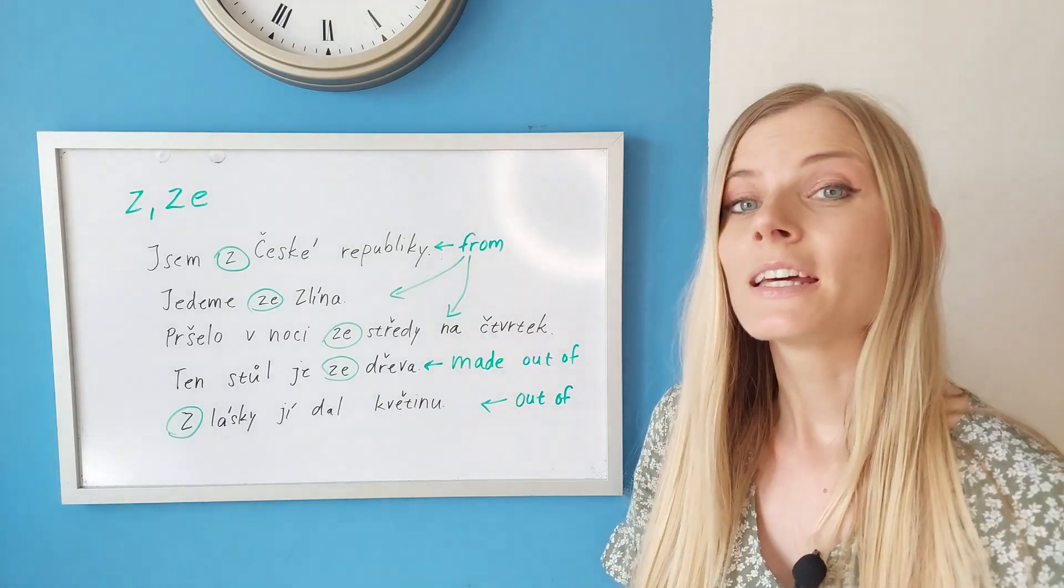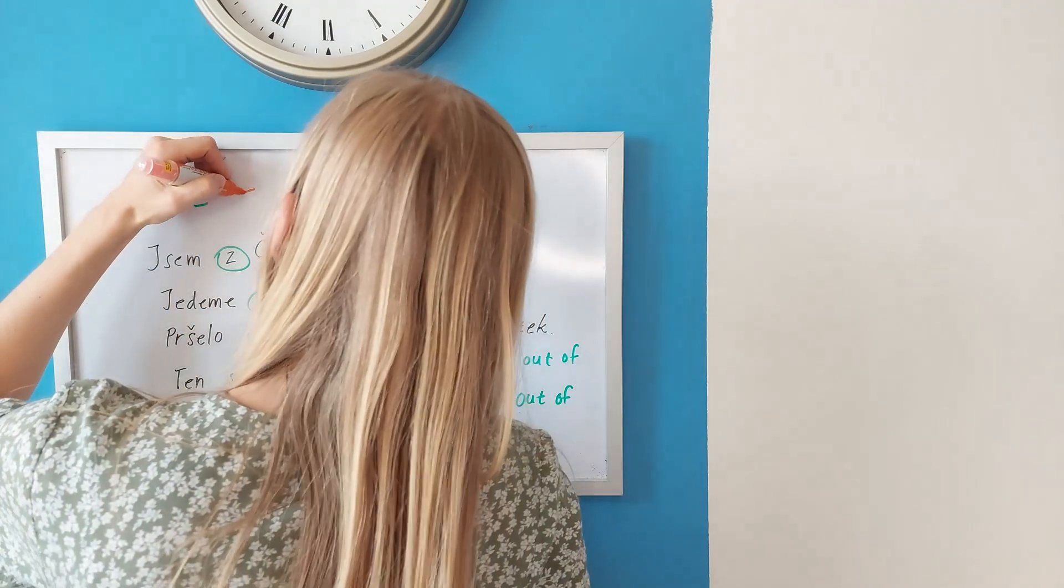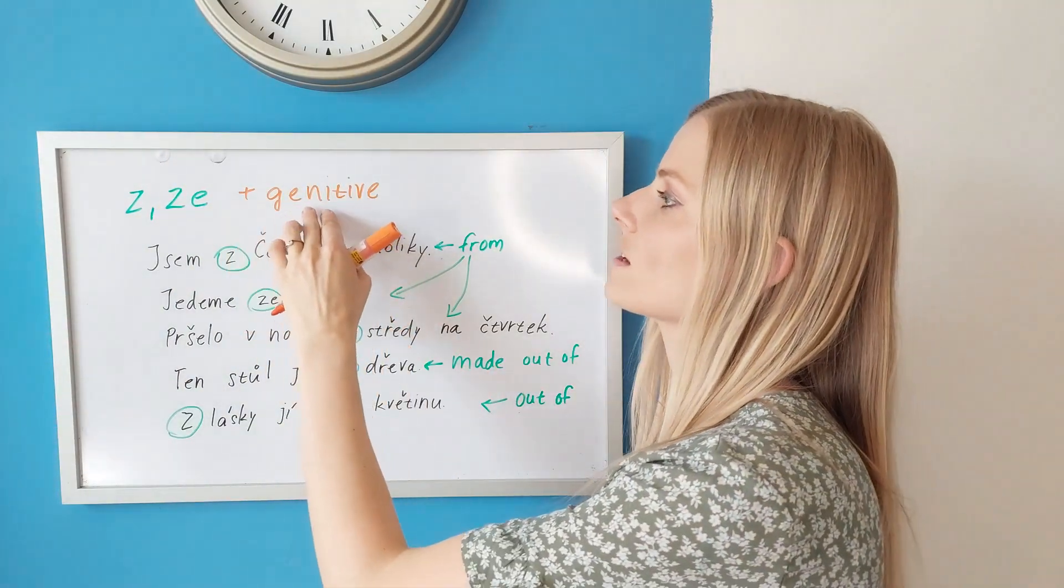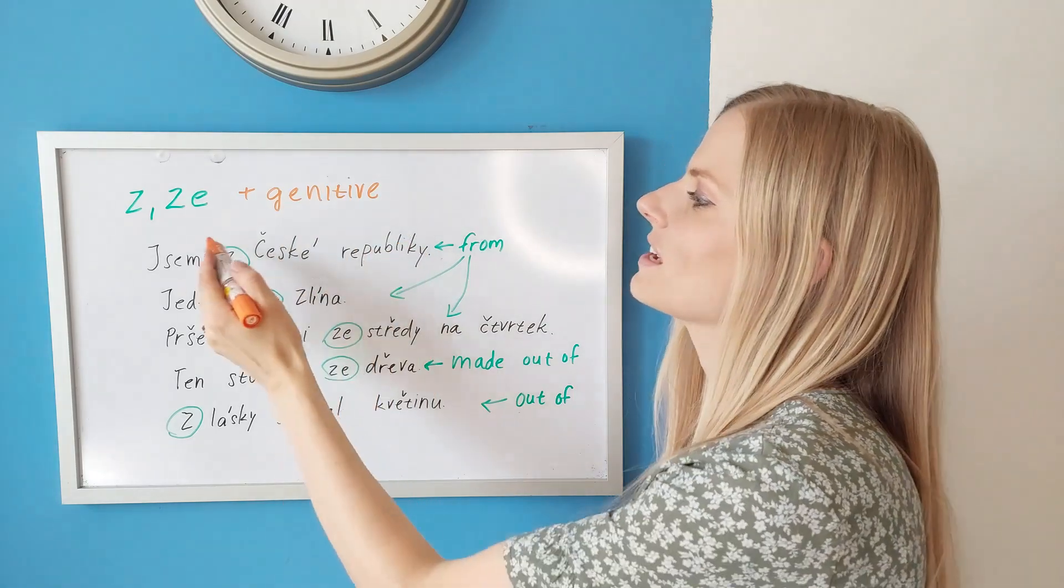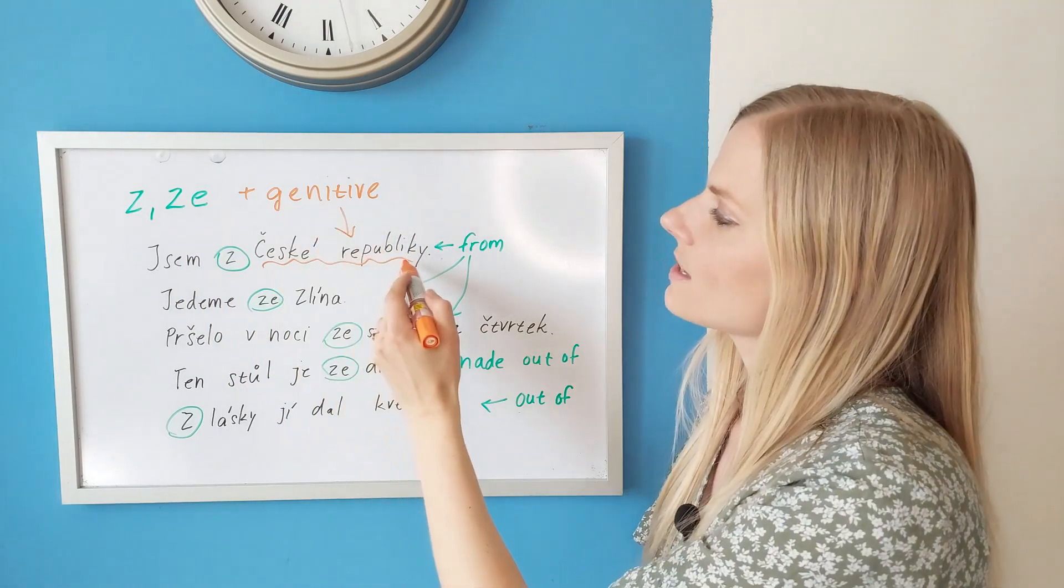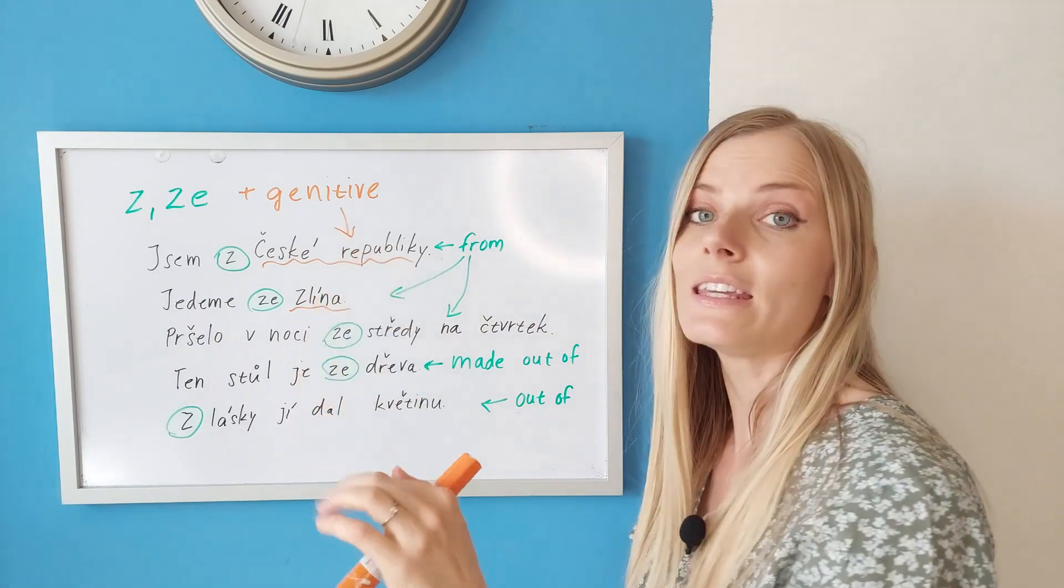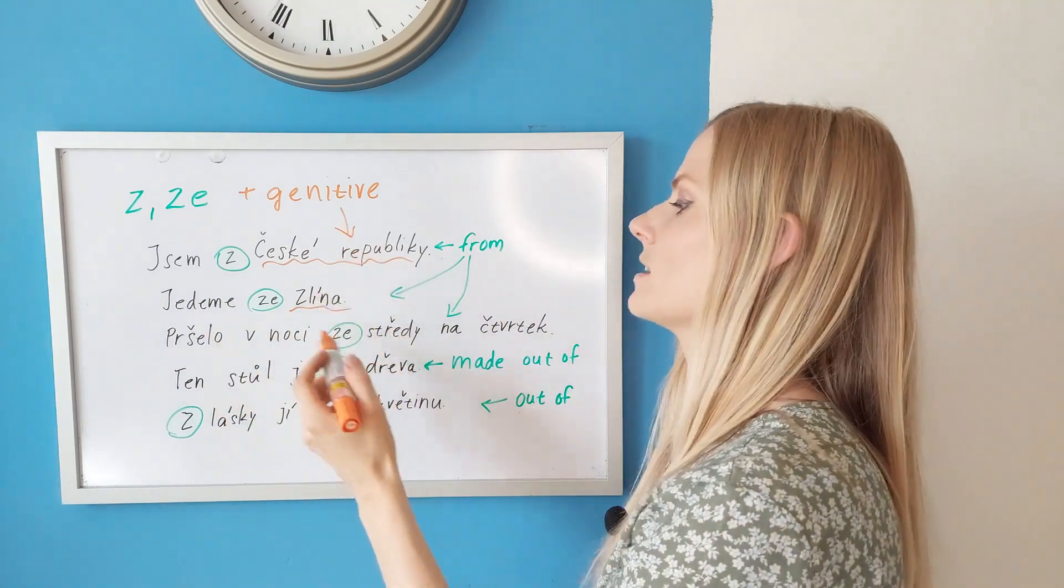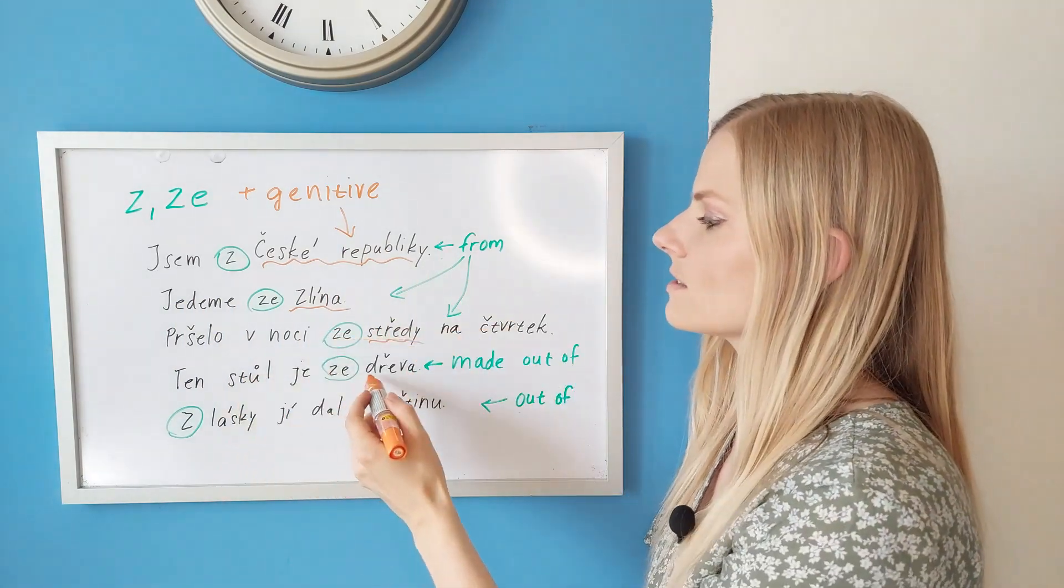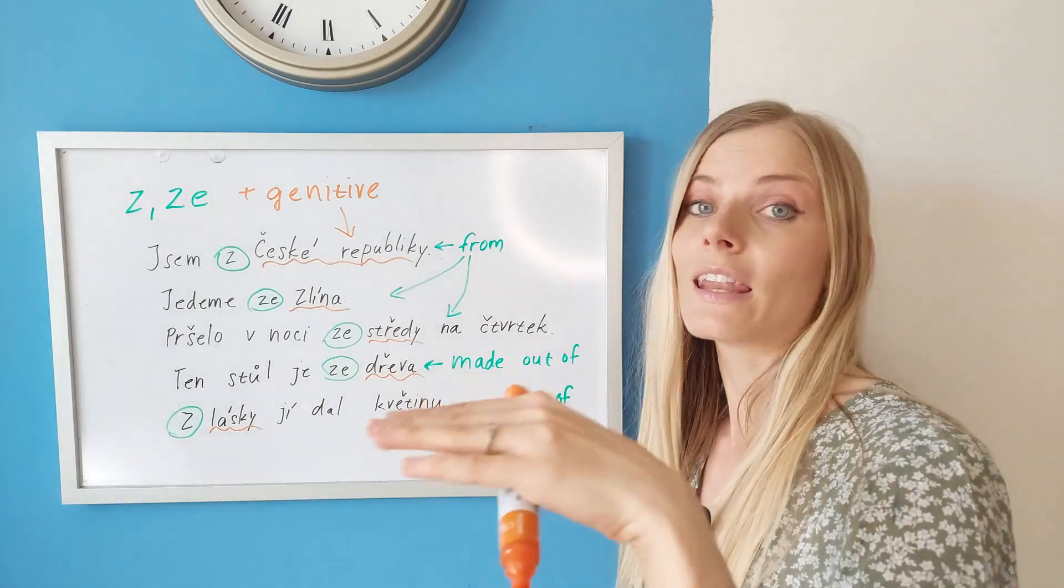Also remember, the preposition z or ze is followed by the genitive case always. So that's a good thing. It's easy because you can never get the case wrong because it's always genitive. Jsem z České republiky - this is the genitive case. Jedeme ze Zlína - also genitive. Ze středy, ze dřeva, z lásky - all genitive.